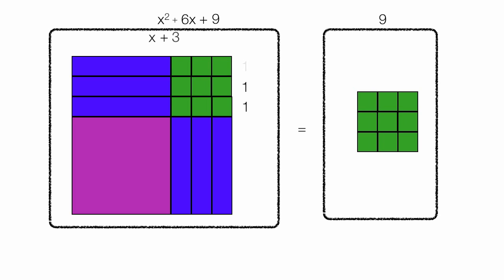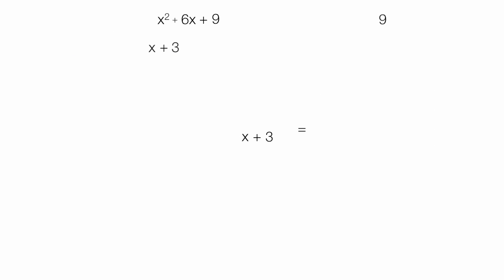And the height is also x plus 3. So the area of the square is equal to x plus 3 times x plus 3. And these are also our factors, right?